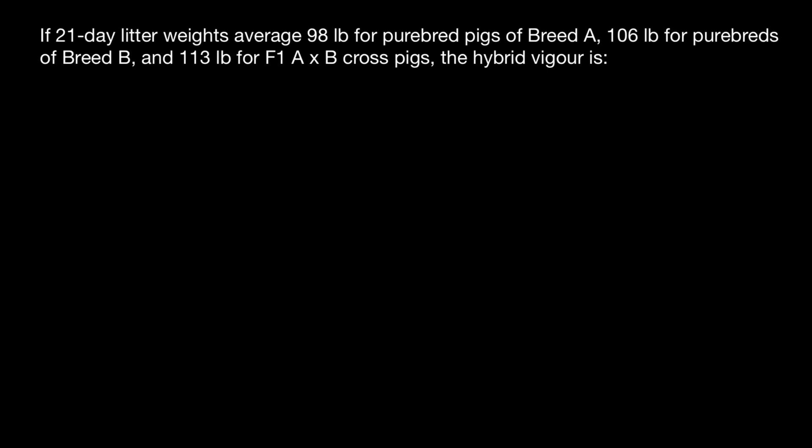Hello and welcome to Nikolai's genetics lessons. Today's problem is if 21-day litter weights average 98 pounds for purebred pigs of Breed A, 106 pounds for purebreds of Breed B, and 113 pounds for a cross of A and B pigs, you have to do certain calculations in order to find the answer.